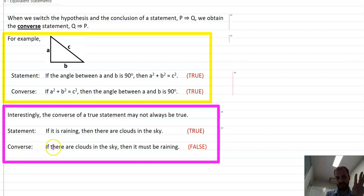Converse, if there are clouds in the sky, then it must be raining. That's not true. You can have a cloudy day and it's not raining. So not all statements can be flipped and be true. In fact, I'd say most statements can't be flipped and be true. The implication only moves one way.